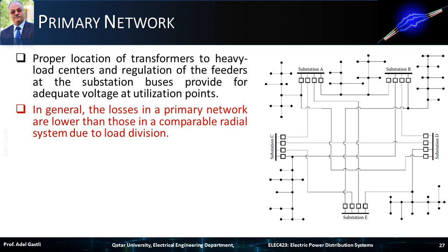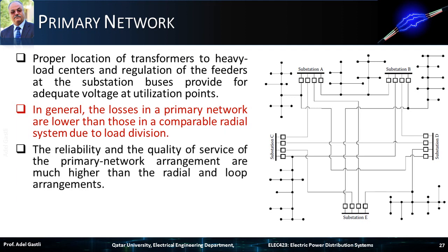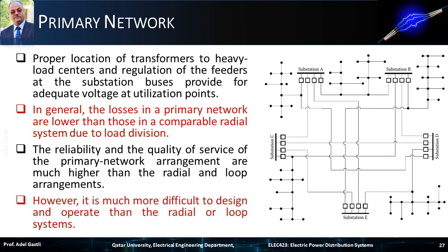In general, the losses in a primary network are lower than those in a comparable radial system due to load division. Besides, the reliability and the quality of service of the primary network arrangement are much higher than the radial and loop arrangements. However, it is much more difficult to design and operate than the radial or loop systems.